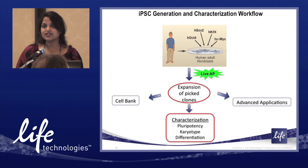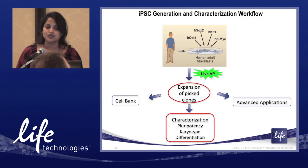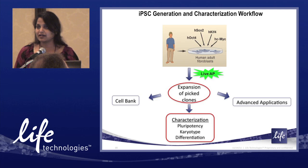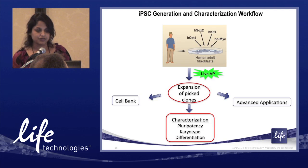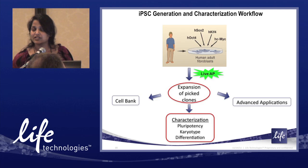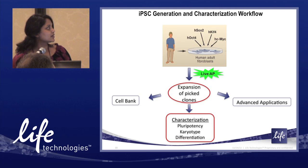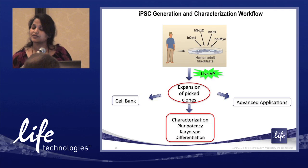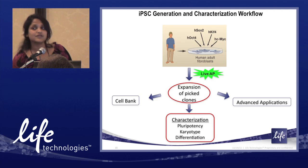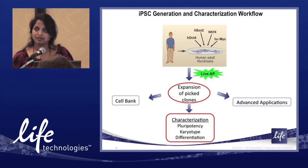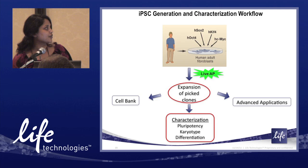The next step was to demonstrate that live alkaline phosphatase could be used in the iPSC generation workflow and clones could be identified and expanded without issues. The workflow involved transducing BJ fibroblasts with the CytoTune reprogramming particles. At the end of three to four weeks, when colonies began to appear on the master dish, we added the live alkaline phosphatase dye and chose the brightest colonies with the most robust staining patterns. Those clones were picked and further characterized.